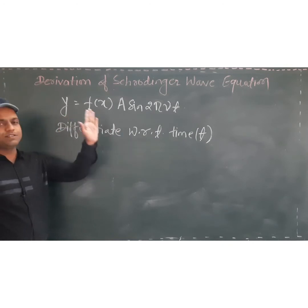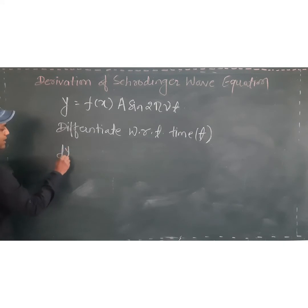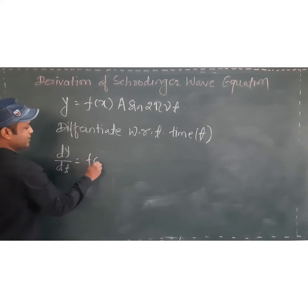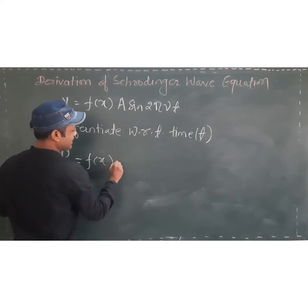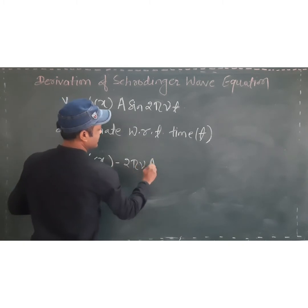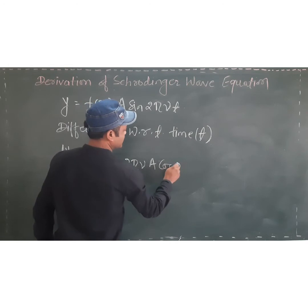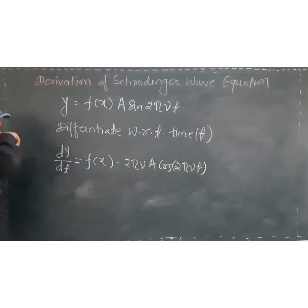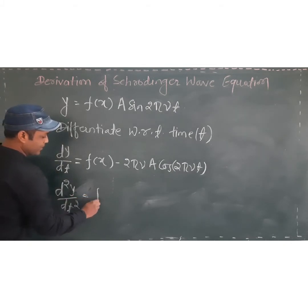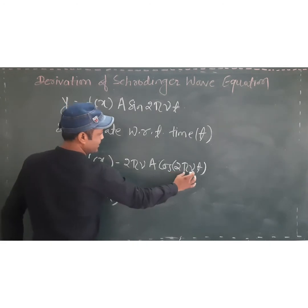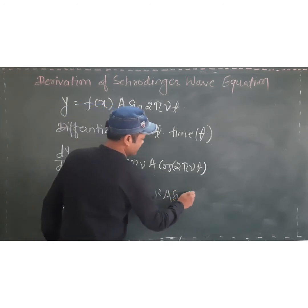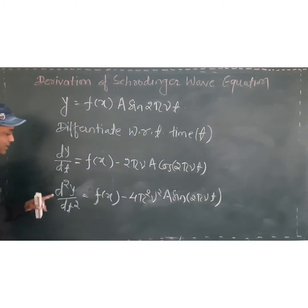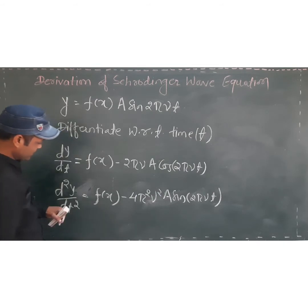For differentiation of y with respect to time: when we differentiate with respect to time, f(x) remains constant. For a single differentiation, the result involves −2π ν · A cos(2π νt). Taking the double differentiation: del²y/del t² = f(x) · [−4π² ν² · A sin(2π νt)]. This is the equation obtained from double differentiation with respect to time.